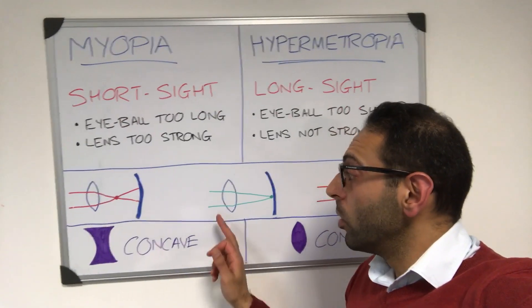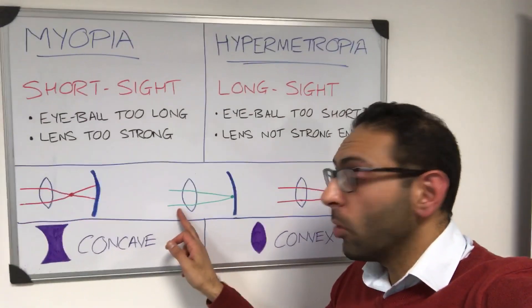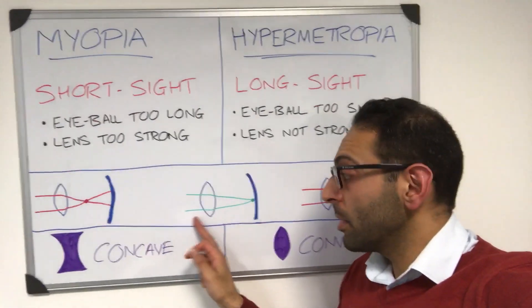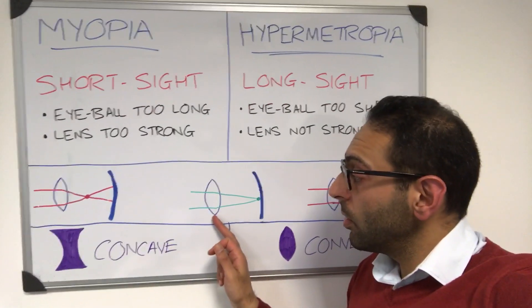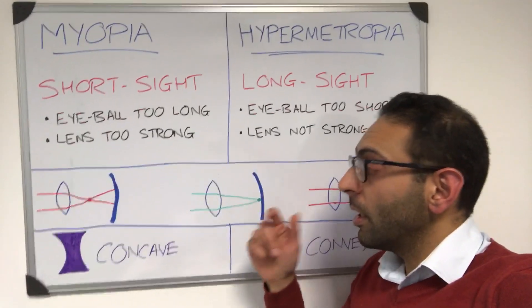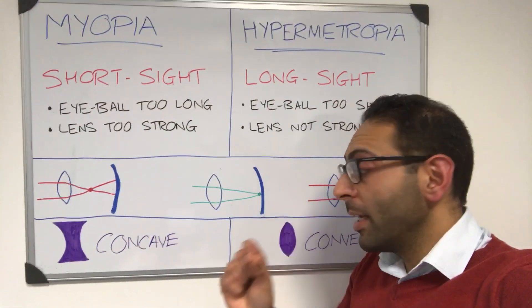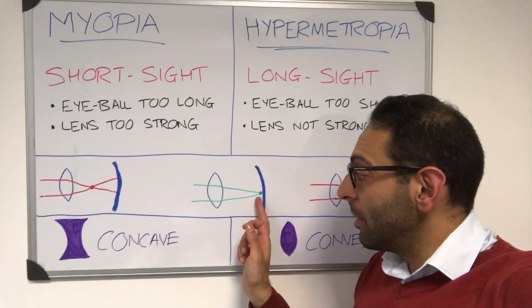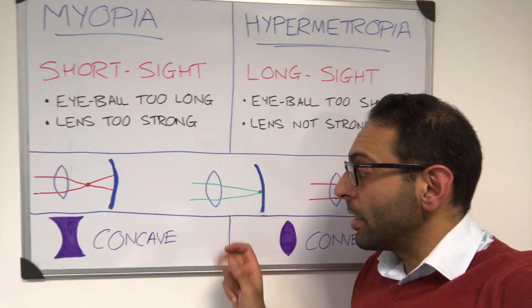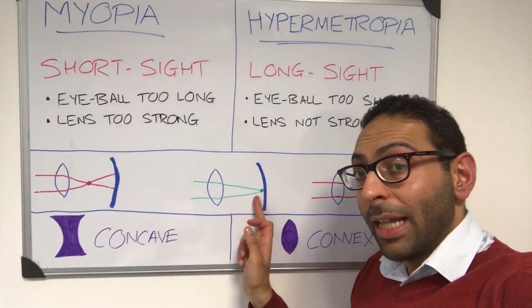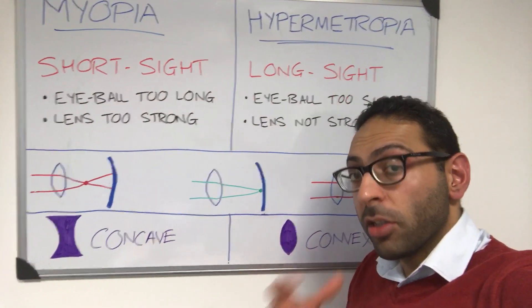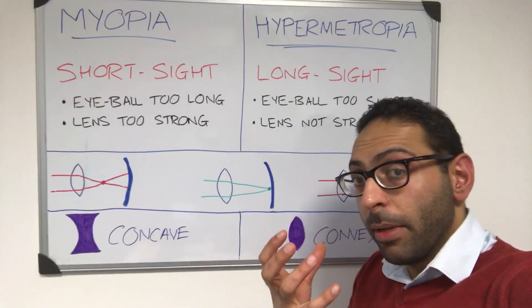With normal vision, light comes in and hits your lens at the front of the eye. The lens focuses that light so it hits the back at the retina — it focuses right at that point on the retina, so you get a really crisp image.